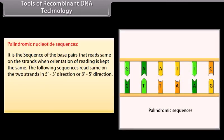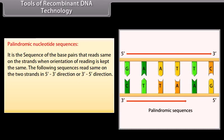Palindromic nucleotide sequences. It is the sequence of base pairs that reads the same on both strands when the orientation of reading is kept the same. The following sequences read the same on the two strands in the 5' to 3' direction or 3' to 5' direction.